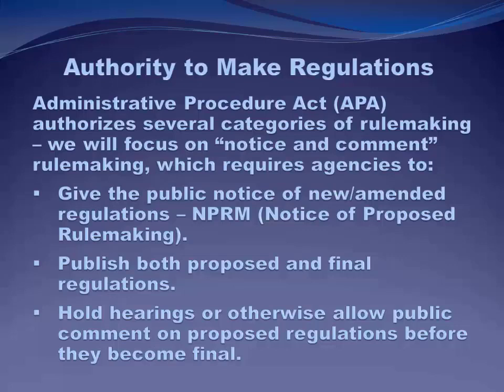We'll focus on notice-and-comment rulemaking, which requires agencies to give the public notice when they're starting to make a new regulation or amend an old one. That's called an NPRM — Notice of Proposed Rulemaking — which goes in the Federal Register. This procedure requires agencies to publish both proposed and final regulations so everyone can review them, and to hold hearings or otherwise allow public comment before the regulation becomes final.